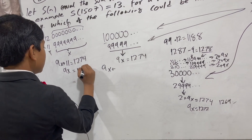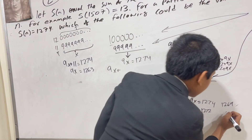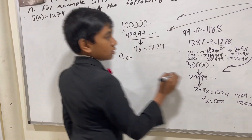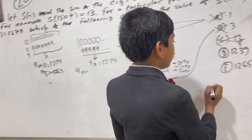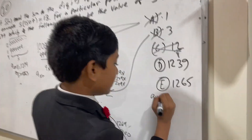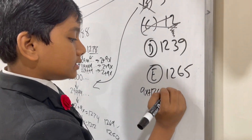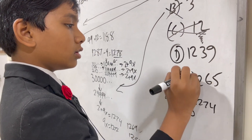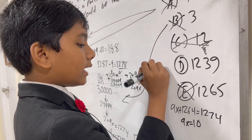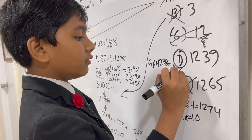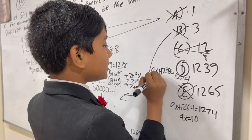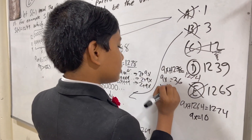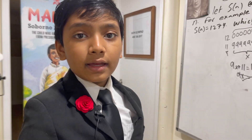Now let's test D and E. For E=1265, we get 9x plus 1264 equals 1274, so 9x equals 10, which has no integer solution. For D=39, we get 9x plus 38 equals 1274, so 9x equals 36, meaning x equals 4. That works! So the answer is D, 39.